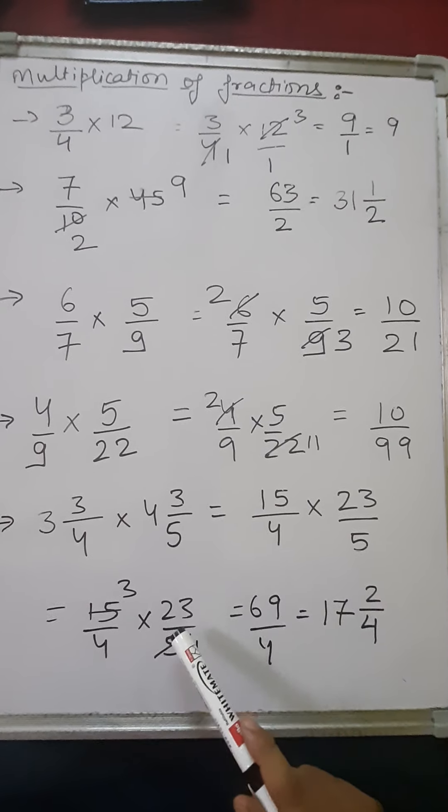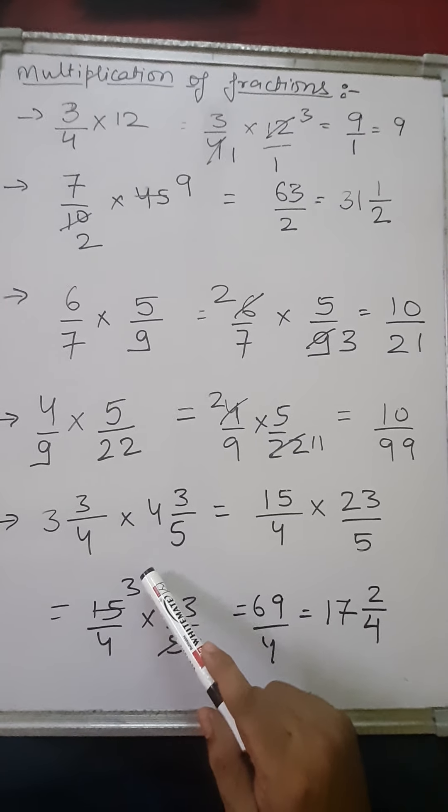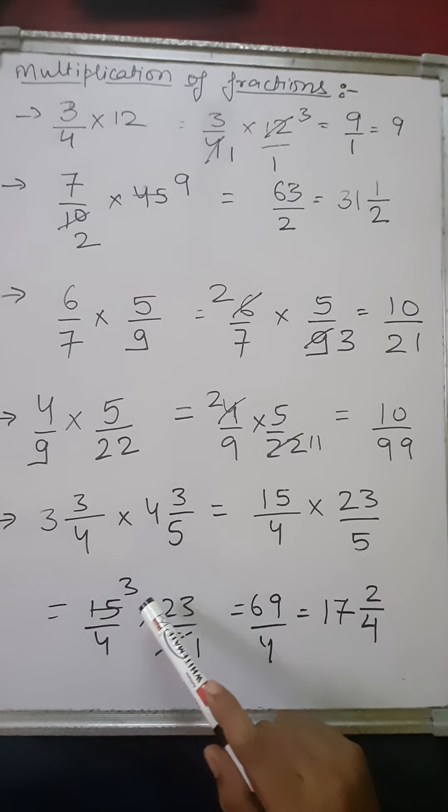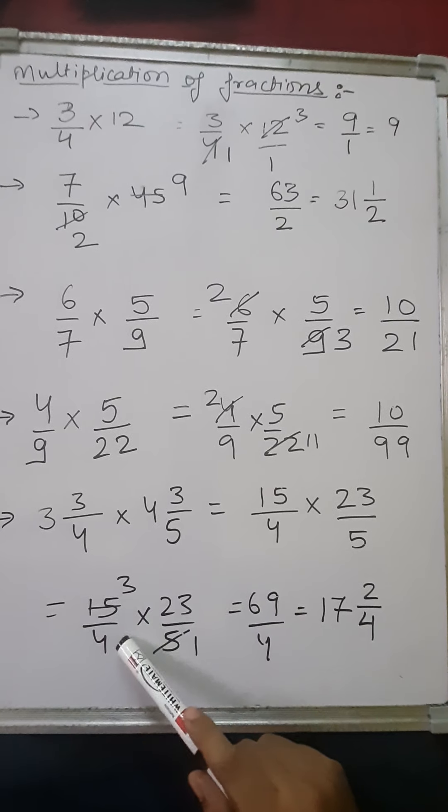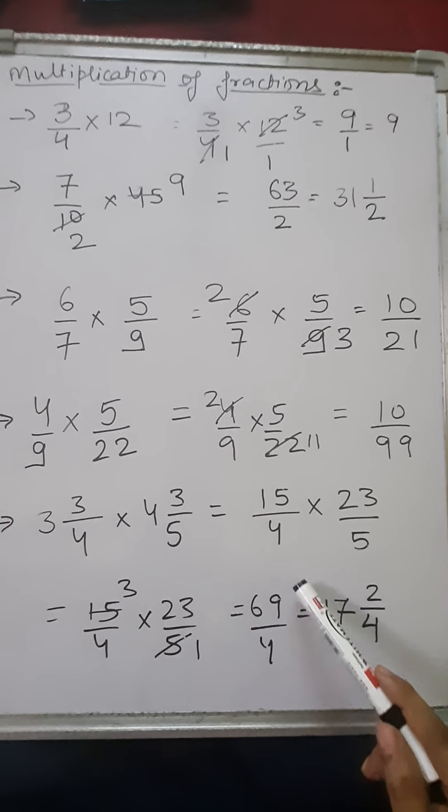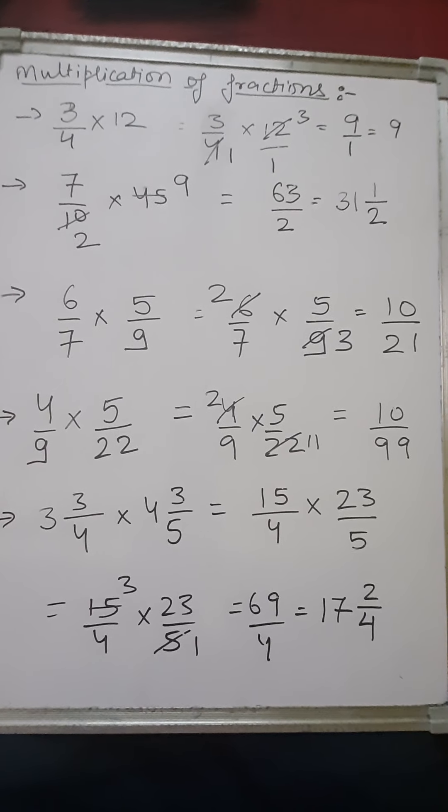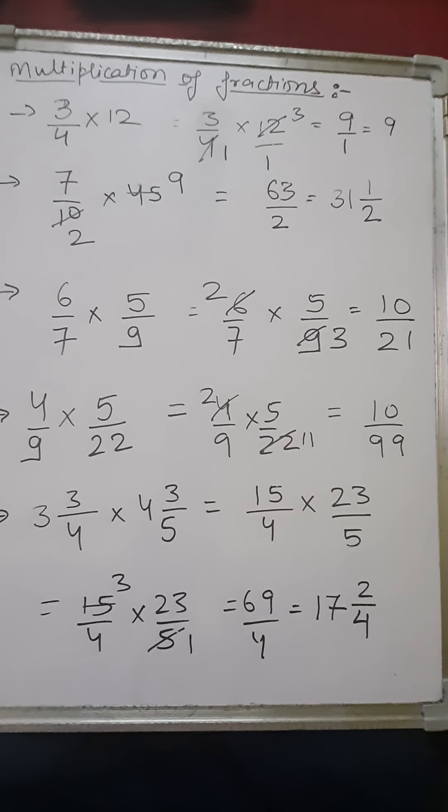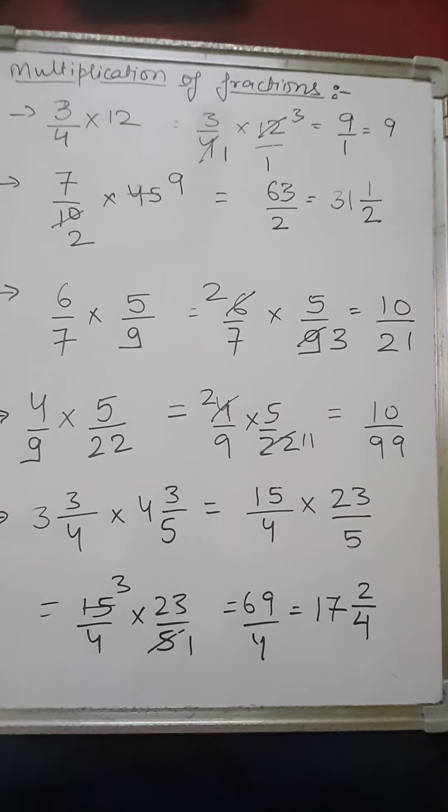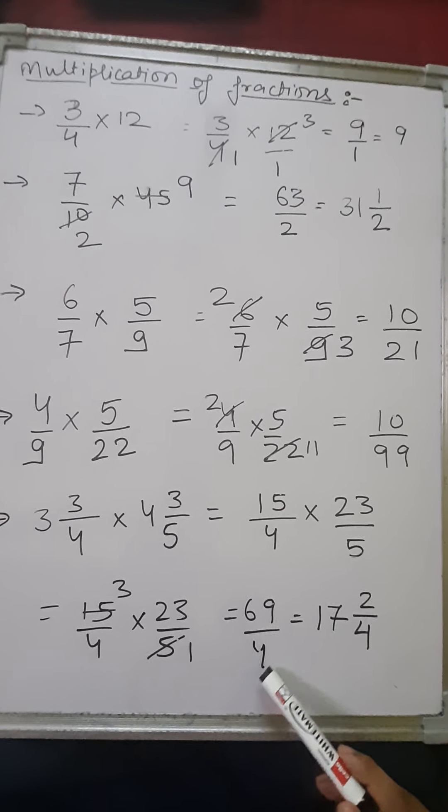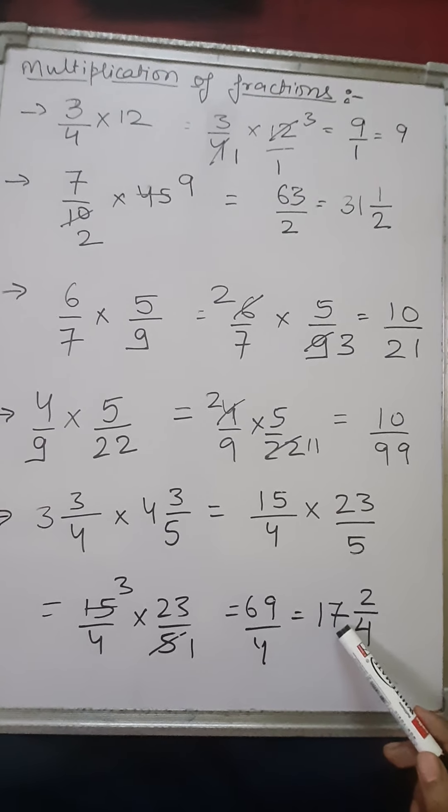So you can see that 4 and 23 don't get cancelled, so 5 and 15 only are the two numbers which we can cancel. 5 ones are 5 and 5 threes are 15, and 3 into 23 is 69 and 4 ones are 4. So 69 by 4 is an improper fraction.